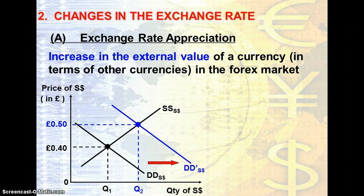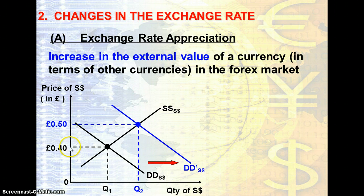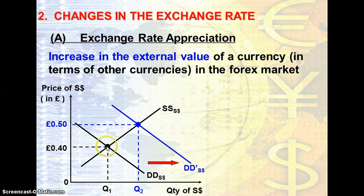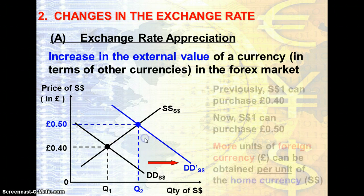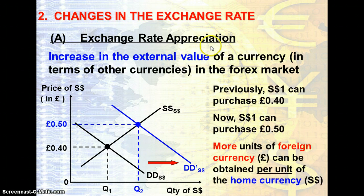When there is an increase in the demand for Singapore dollars, it will shift the demand to the right. At the original level of 0.40 cents, there is a shortage whereby the quantity demanded of Singapore dollars is more than the quantity supplied. Because of this shortage, it will cause an upward pressure on the price of Singapore dollars, and hence there is an increase — this is known as the appreciation of the Singapore currency.